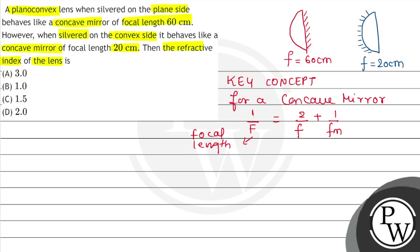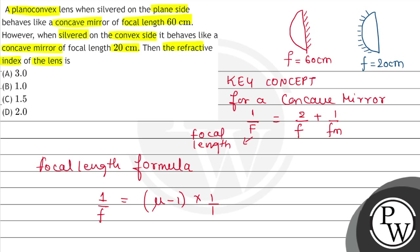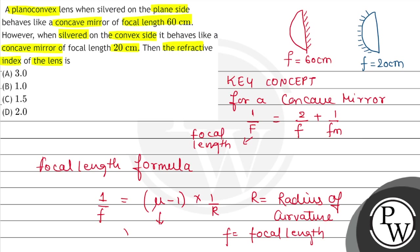We will also use the lens maker's formula for refractive index. The focal length formula gives 1/f equals (μ − 1) multiplied by 1/R, where R is the radius of curvature, f is the focal length, and μ is the refractive index. These two formulas we will use.